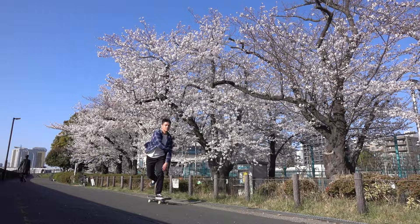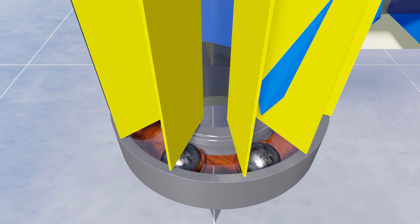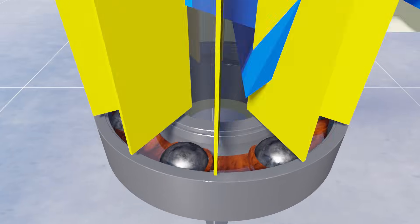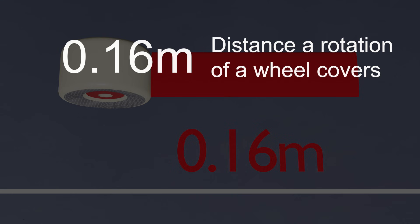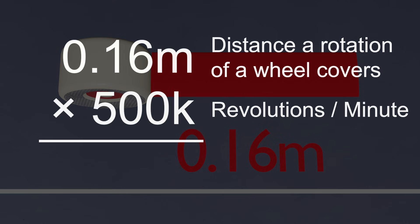Now let's flip the scenario. What if the wheel actually spun at 500,000 RPM? In this case, we need to multiply 0.16 meters, which is the wheel's circumference, by 500,000. Then, in a minute, the wheel would travel 80 kilometers.